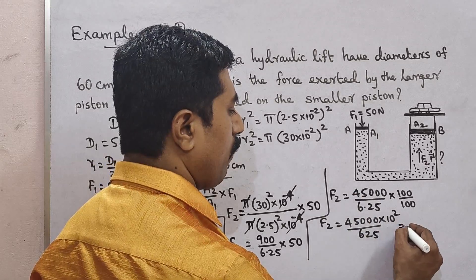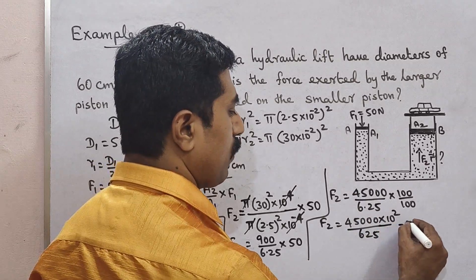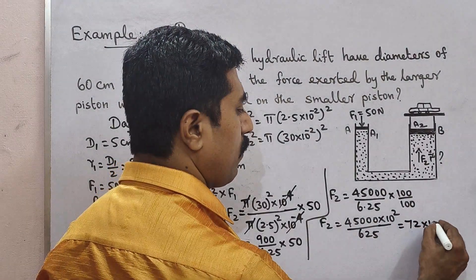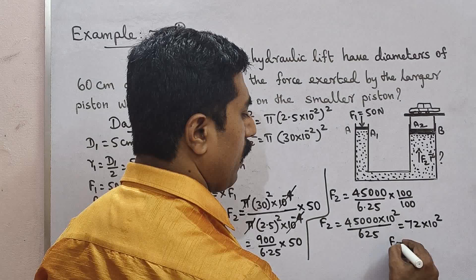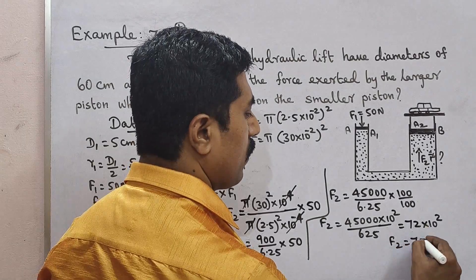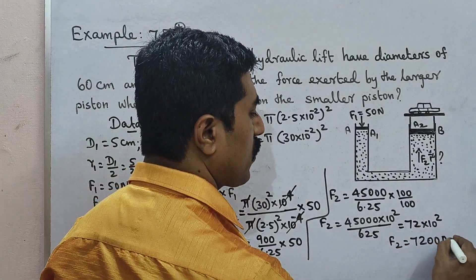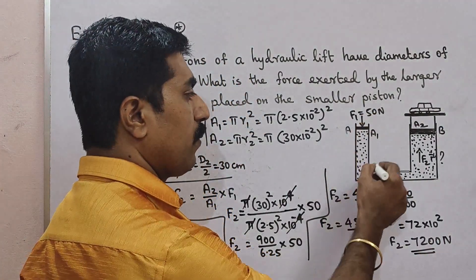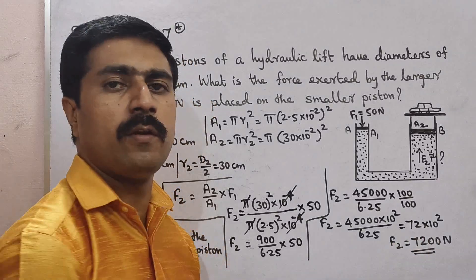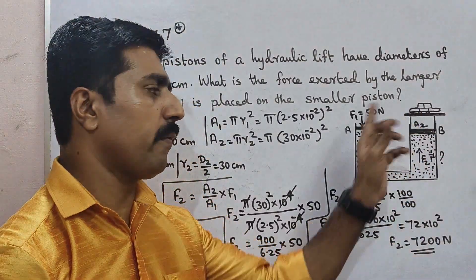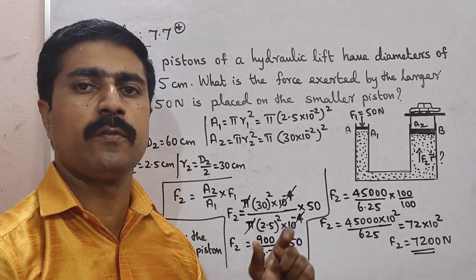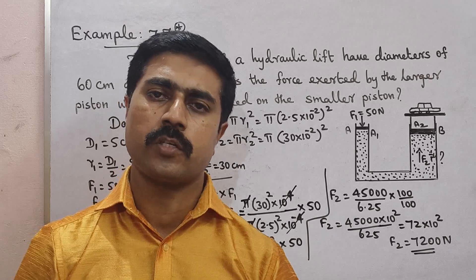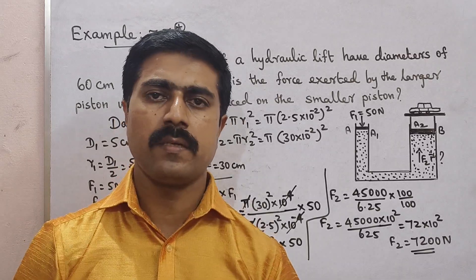F2 is equal to 7200 Newton. So 50 Newton input gives 7200 Newton output force. This is the force multiplier. It is a very important problem — practice and share with your friends. Thank you.